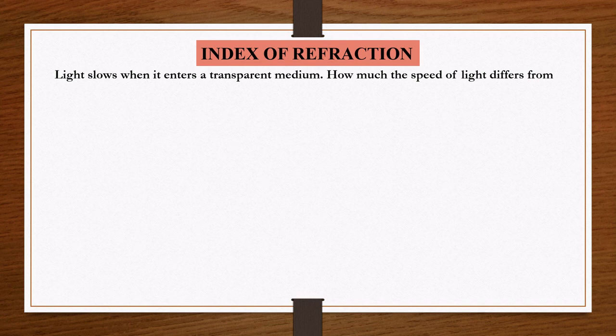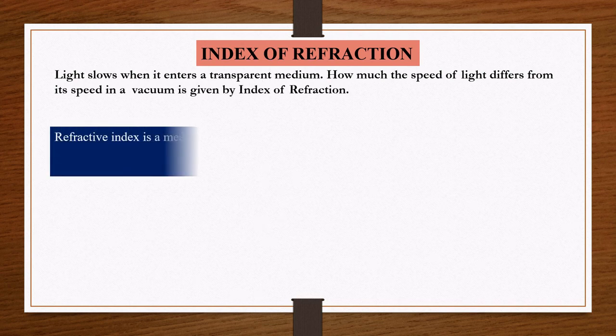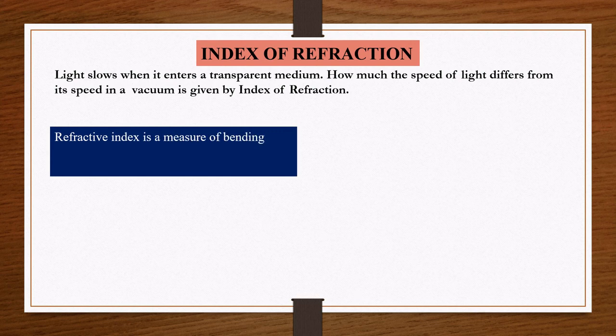How much the speed of light differs from its speed in a vacuum is given by the index of refraction. Refractive index is also a measure of bending of light rays when it travels from one medium to another.